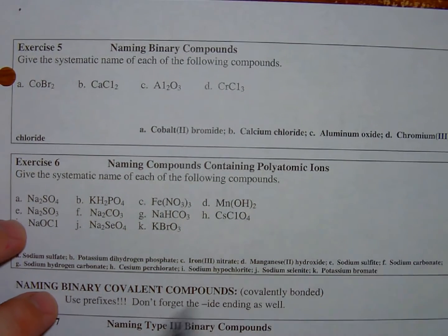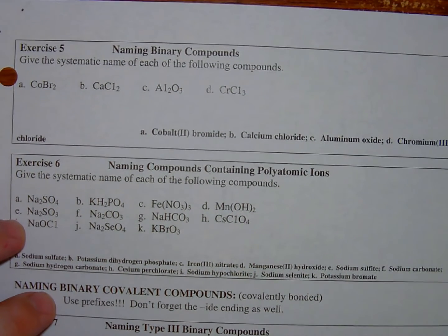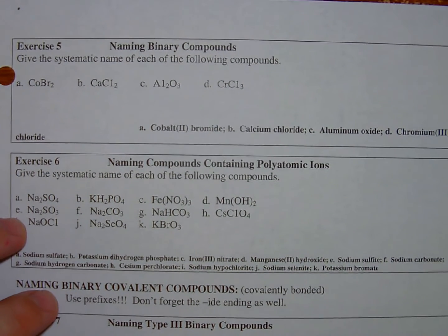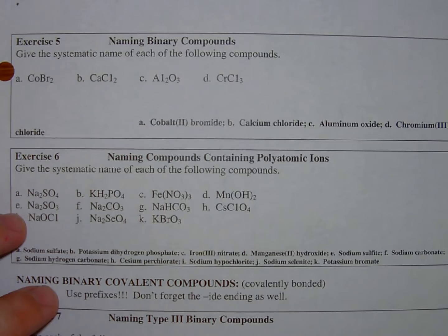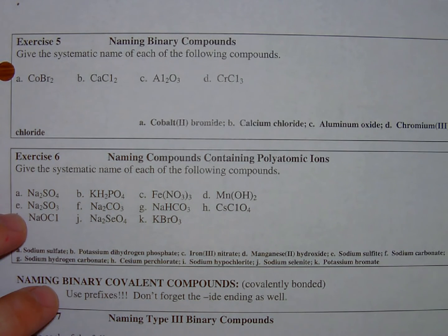Exercise 5, give the systematic name for each of the following compounds. What we're going to see here is a mixture of metals that form one cation, one charge, and metals that form more than one cation.